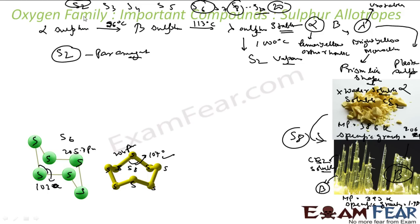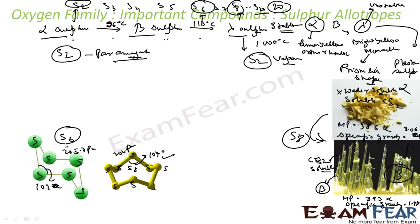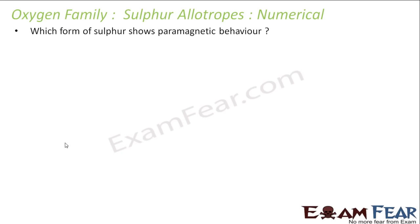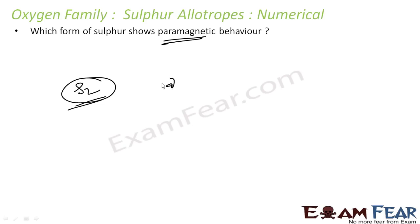These are the various allotropes of sulfur — S2, S3, S4, S5, S6, S8, up to S20. We studied S2, S6, and S8. S8 includes alpha, beta, and lambda sulfur. Heating alpha to 96°C gives beta; heating to 113°C gives lambda; heating further gives S2 vapors. A key numerical: which form of sulfur shows paramagnetic behavior? S2 sulfur shows paramagnetic behavior at high temperature around 1000 Kelvin, because it has two unpaired electrons in the anti-bonding pi orbital, just like O2.